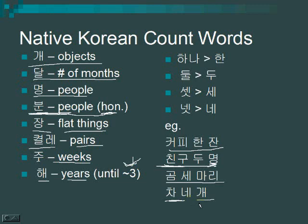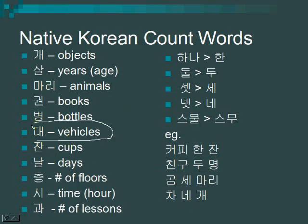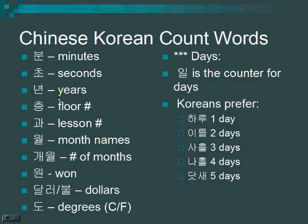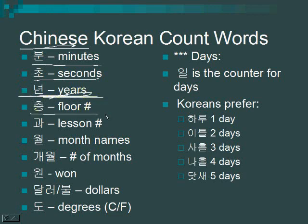Now for count words that use Chinese Korean numbers: 분 means minutes — for example, 오십 분 is fifty minutes. 초 is seconds. 년 is the most popular counter for years. 층 here refers to a specific floor number. 과 refers to a specific lesson number. 월 is for month names — 일월 is January, 십이월 is December, 오월 is May.